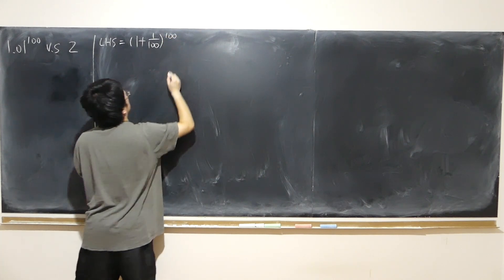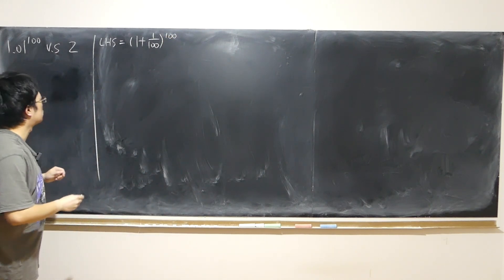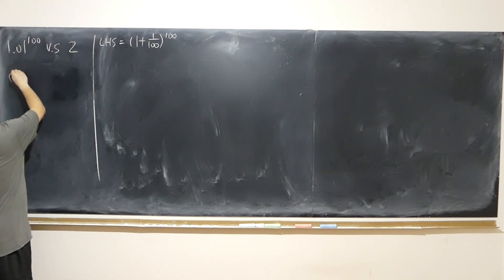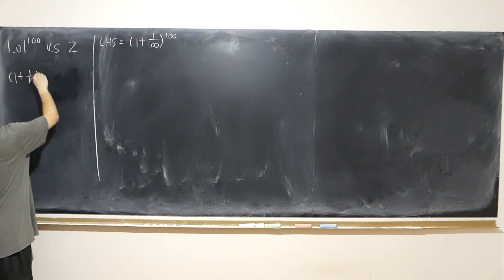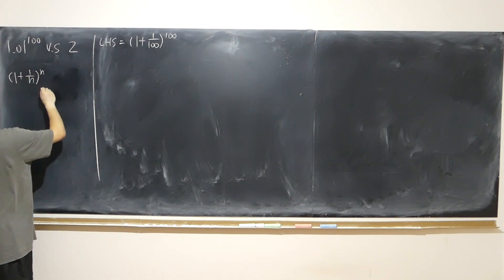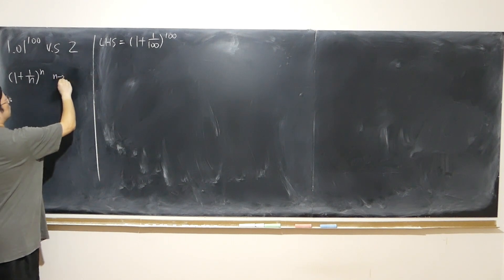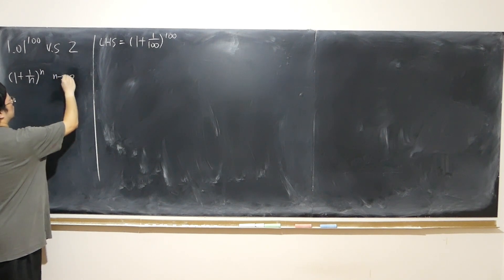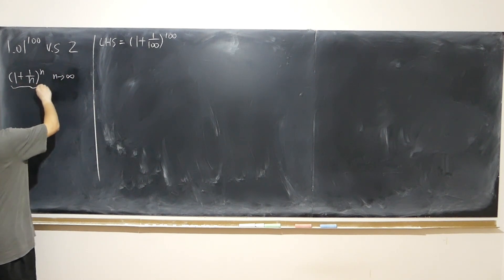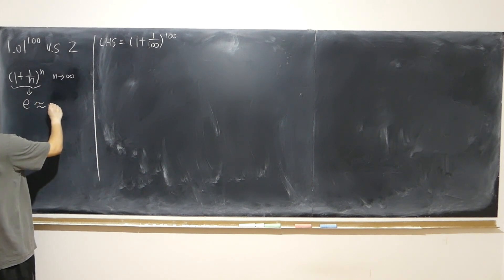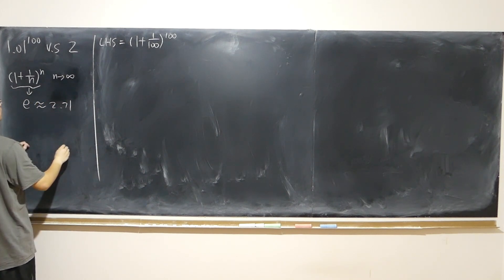That immediately reminds me of the definition of the base of the natural logarithm — that's (1 plus 1 over n) to the power of n, where n is a positive integer. As n approaches infinity, that whole thing approaches e.